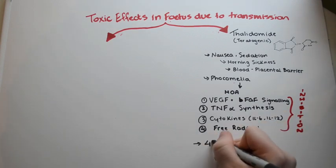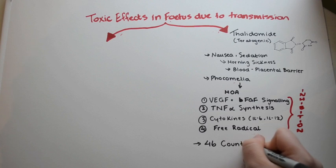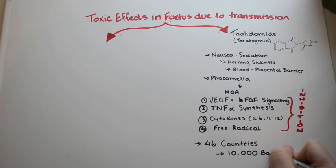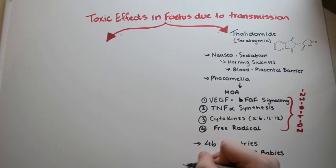Thalidomide was sold in over 46 countries with approximately 10,000 babies being affected by this. In recent years the anti-angiogenic properties of Thalidomide have been investigated for use in cancer treatment.